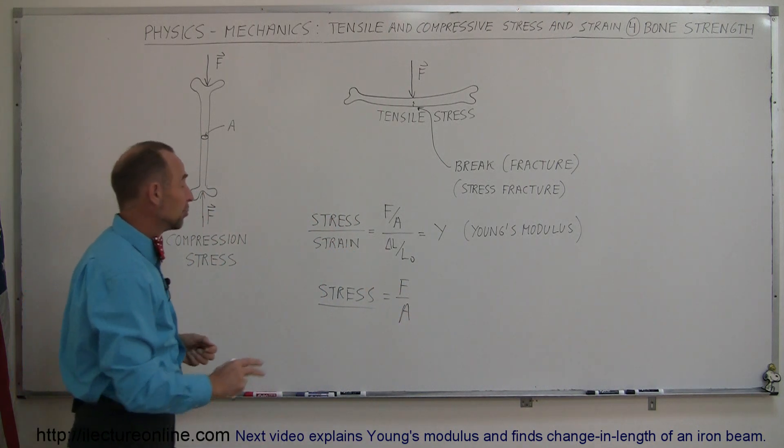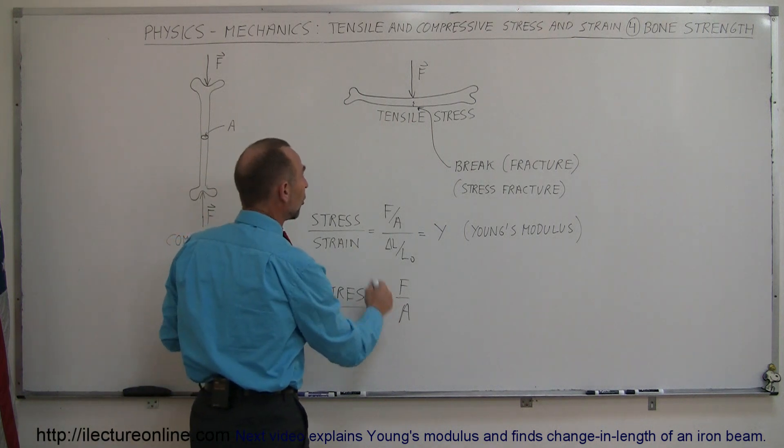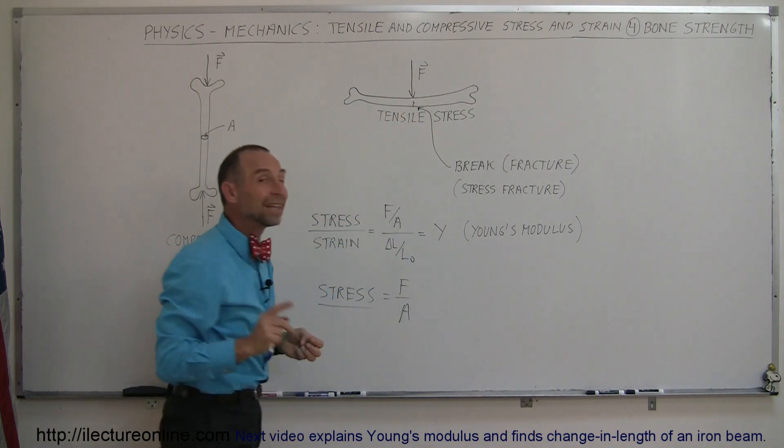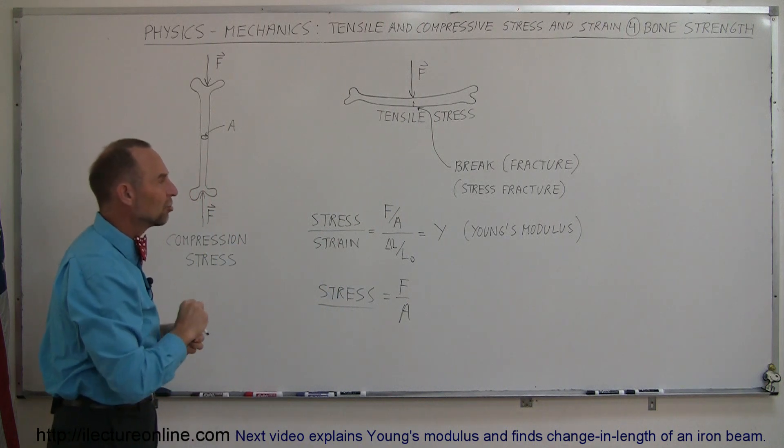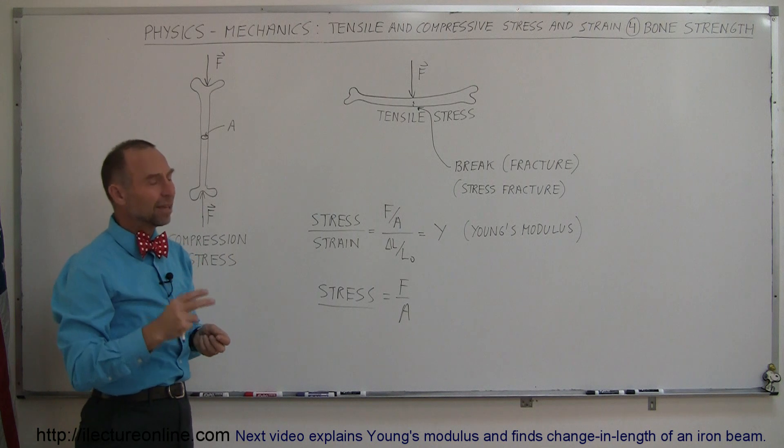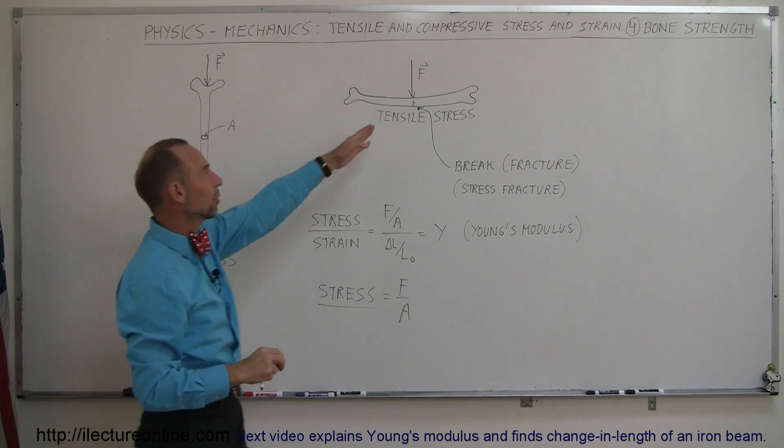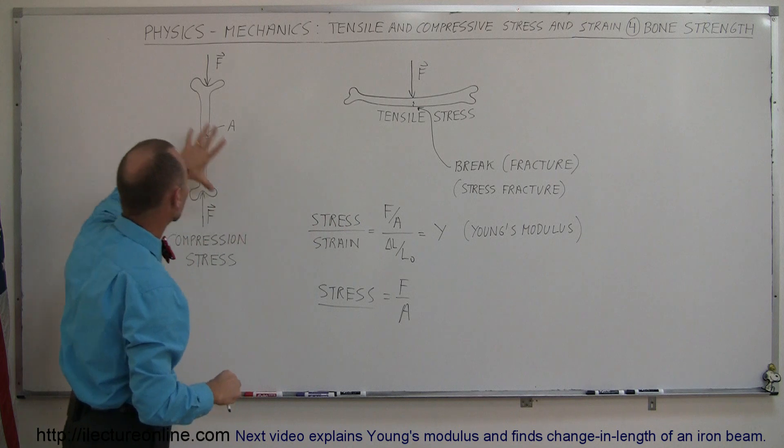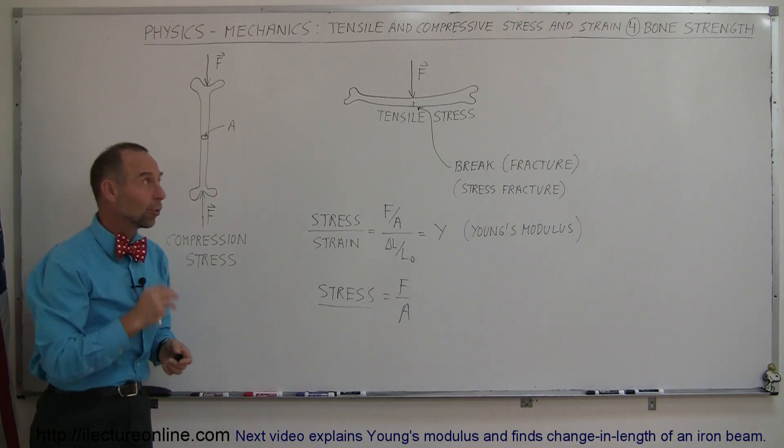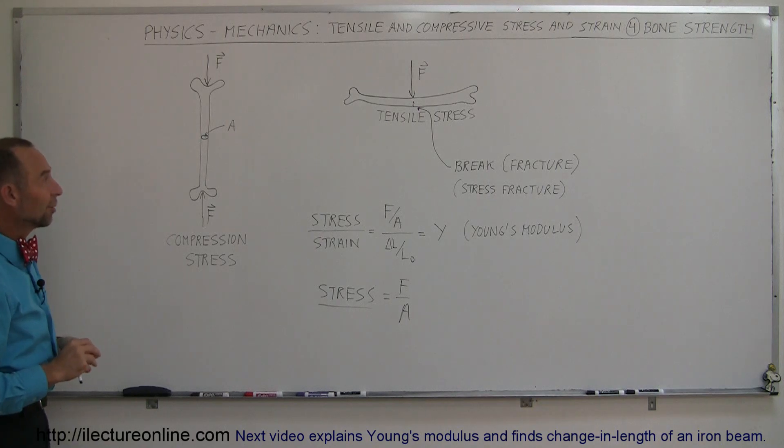On the other hand, bones cannot withstand a lot of force when the bones are being pulled apart under tensile stress. In that case bones will break a lot easier. The ratio of the strength of bones under compression to tensile stress is about 10 to 1. So it doesn't take nearly as much force to break a bone this way as compared to that way. So another nice application for tensile stress and compressive stress.